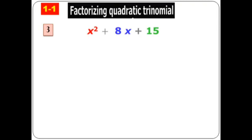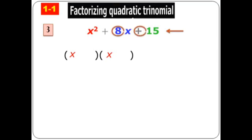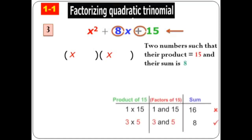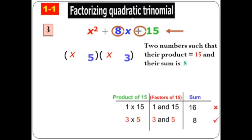Example three: x squared plus eight x plus 15. First I put x and x in two brackets. Then I ask about 15 — which two numbers, when multiplied, give 15 and when added give eight? That's three and five. The last sign is positive, so the two brackets take the sign of the middle, which is plus. So the factorization is (x + 5)(x + 3).